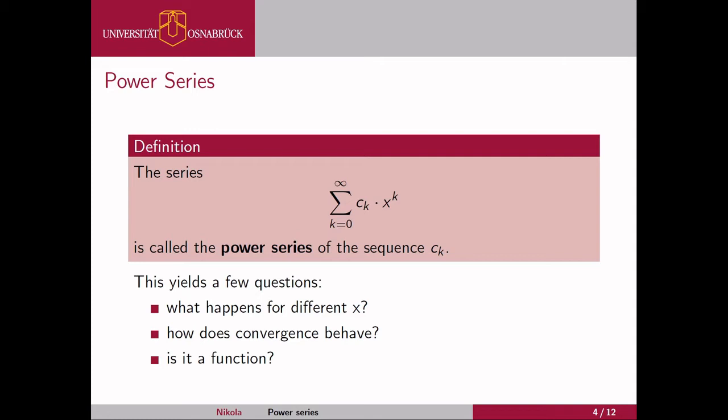And now this raises a few interesting questions. For example, if c wasn't a sequence which may converge or diverge, we don't know. If it was just a constant number, we knew that the series was converging if the absolute value of x was smaller than 1. But what about now? Like when does it converge now? Does it converge at all? And if it does, is it a function or is it not? And if it's a function, does it have usual properties of a function? Is it continuous? And so on. So these are all questions that we can ask and we will now look into it in more detail and try to answer those questions.